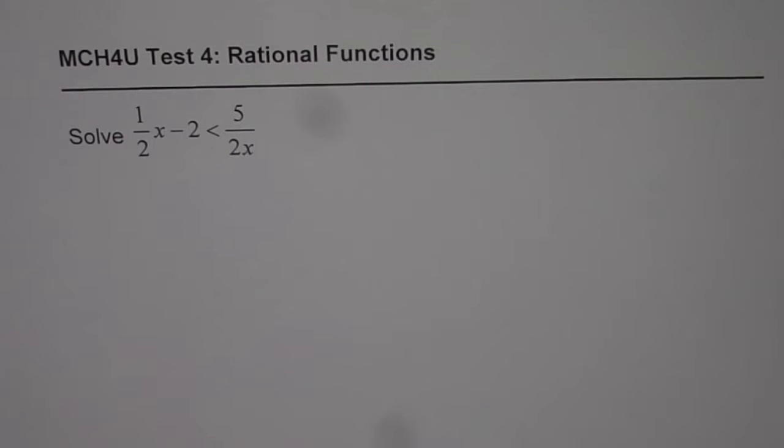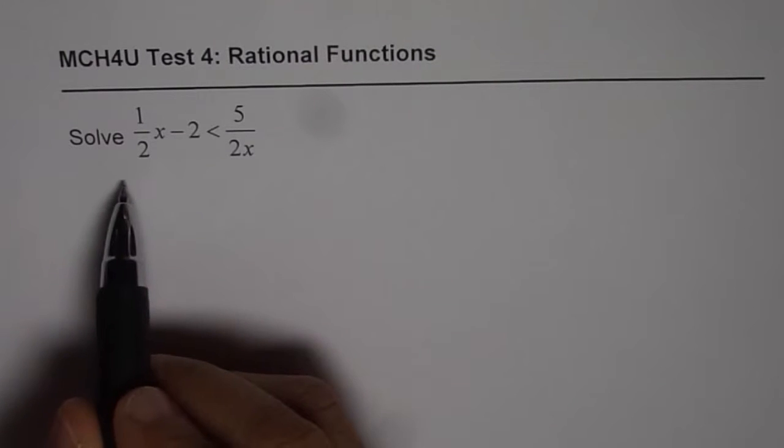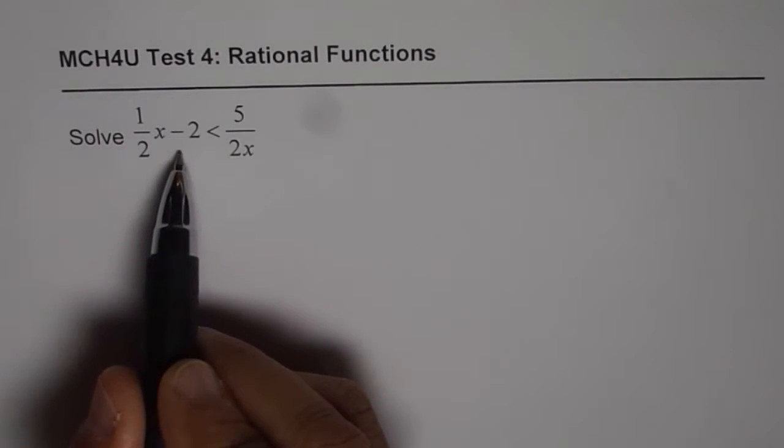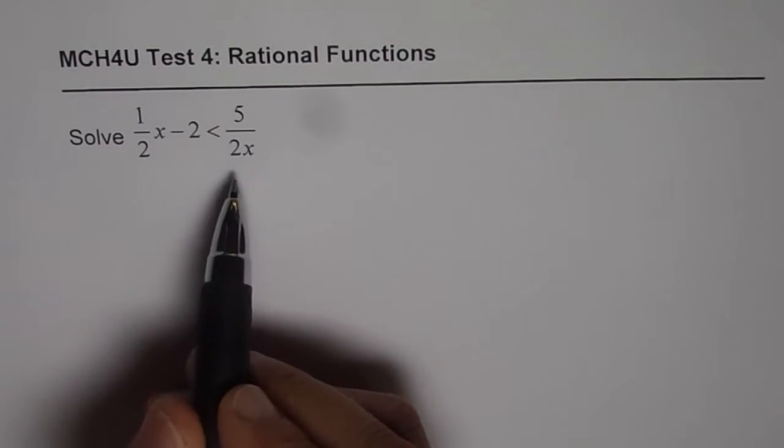I'm Anil Kumar and here is a rational inequality to solve. Question is, solve 1/2 x minus 2 less than 5 over 2x.